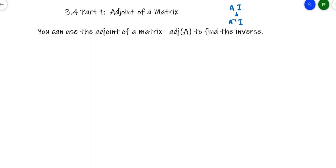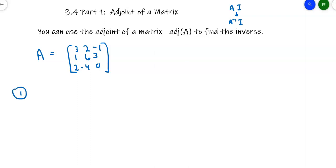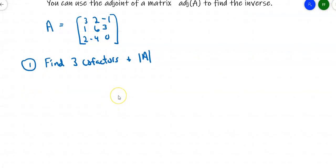The process for finding an adjoint works like this. Suppose I have matrix A, which is the matrix [3, 2, -1; 1, 6, 3; 2, -4, 0]. The first thing I need to do is find three cofactors and the determinant of matrix A — technically they could be any three. Let's try to do this in some organized fashion. I'll start with C₁₁.